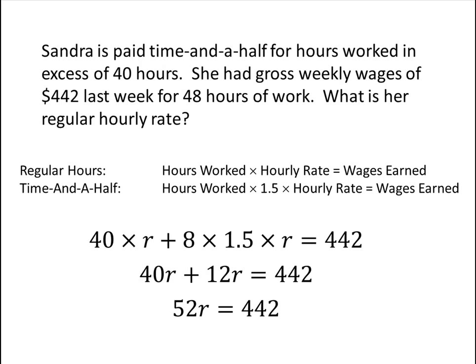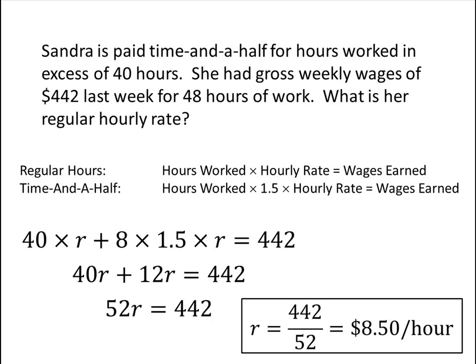And then to figure out our hourly rate, we simply divide both sides of this equation by 52. So our hourly rate turns out to be 442 divided by 52, we throw that in our calculator and figure out that our hourly rate is $8.50 per hour.